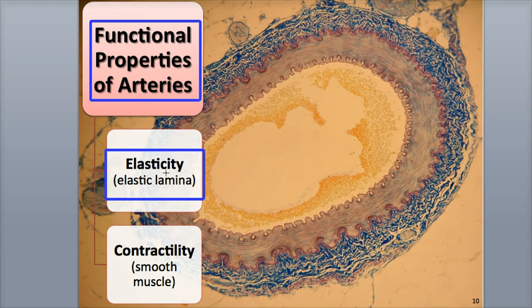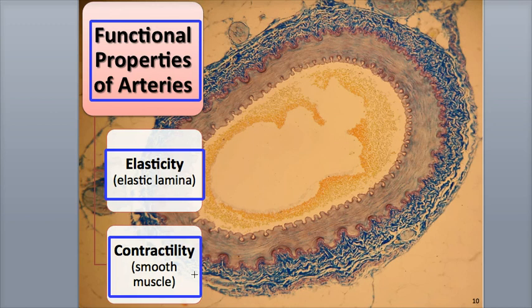Elasticity refers to the ability of the artery to stretch and then recoil back to its original diameter. The smooth muscle of the tunica media provides for the artery's contractility — the ability of the smooth muscle fibers to contract and decrease the diameter of the vessel.